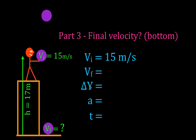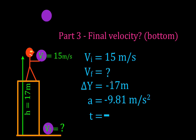We do know the change in height, and we have to keep our signs straight. The change in height is actually negative 17 meters. Where the object starts, we define as the zero position, and since the object falls down, the change in position is 17 meters in the negative direction — so negative 17 meters. For free fall kinematics, the acceleration is negative 9.81 meters per second squared. We're trying to find the final velocity and we don't need the time in this problem.